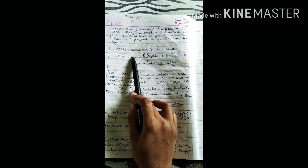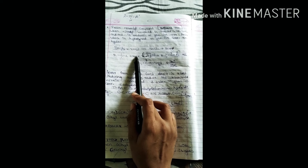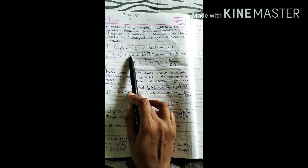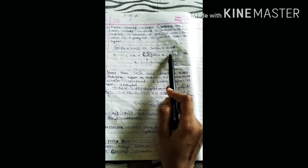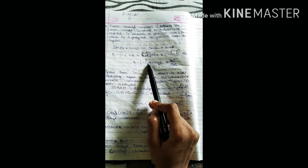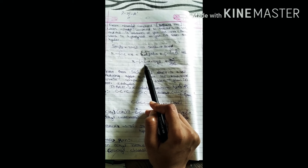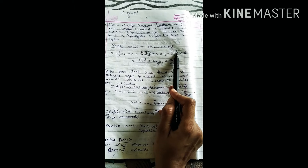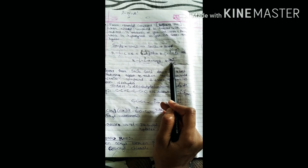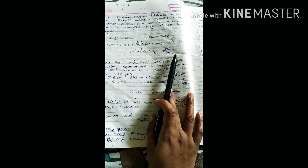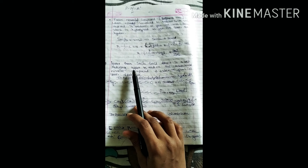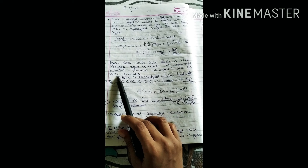We can also get aldehyde using SnCl₂ and HCl. Apart from SnCl₂/HCl, DIBAL-H (diisobutylaluminium hydride) is the best reducing agent for selectively converting nitrile or ester compounds to aldehydes.